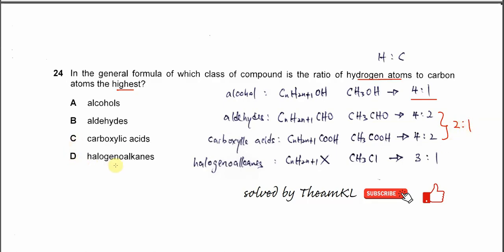And the last one, halogen. The general formula is CnH2n+1X, where X is the halogen. Let's use chloromethane. The ratio between hydrogen and carbon is 3 to 1.